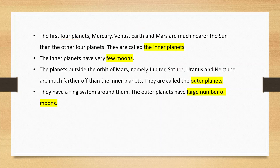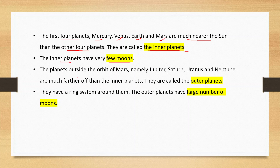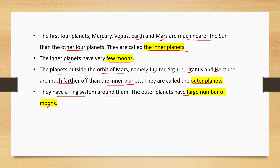The first four planets — Mercury, Venus, Earth, and Mars — are much nearer the Sun than the other four and are called the inner planets. The planets outside the orbit of Mars — Jupiter, Saturn, Uranus, and Neptune — are much farther off and are called the outer planets. The outer planets have a ring system around them and a large number of moons.